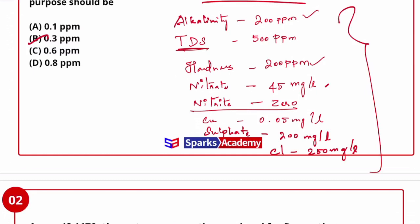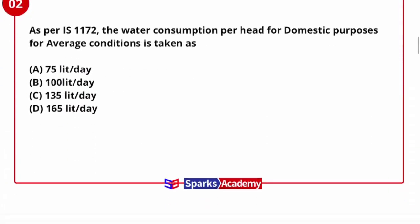Other important parameters include fluoride content, copper, zinc, and phenolic compounds. Now let's move to the next question: as per IS 1172, the water consumption per head for domestic purpose under average conditions.